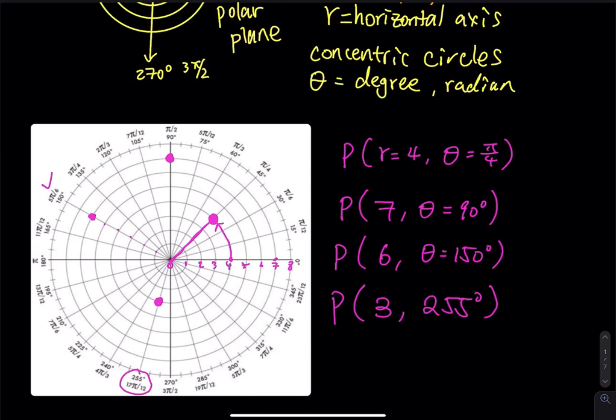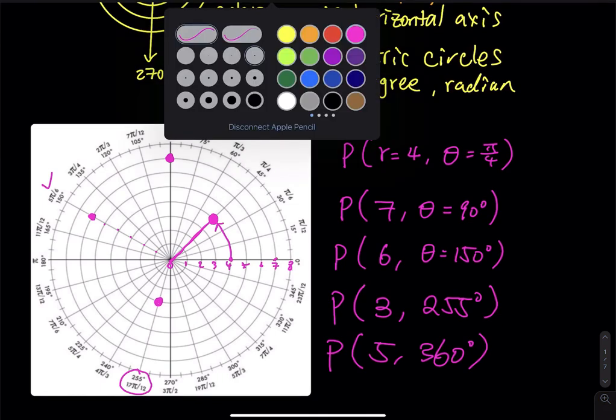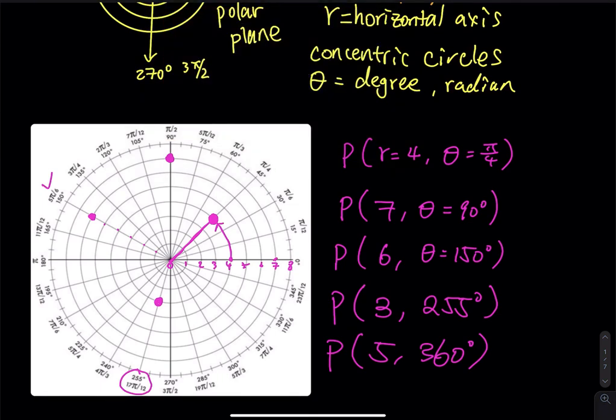All right, so let's do the last one. So the last one is 5 and then 360 degrees. So 360 degrees is one full circle. So that means you have to go this way. So let me use another color for this one. So 5 and then 360 degrees. So you just trace one full circle. And then you stop at the starting point. So now let's get rid of that. So this is your 5, 360.